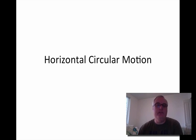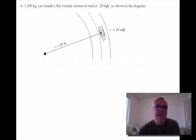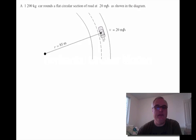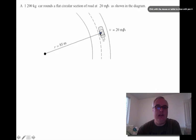Okay, horizontal circular motion. Remember that this is motion where the centripetal acceleration is perpendicular to the force of gravity. Here's a typical question: we have a 1200 kilogram car that is driving around a circular section of road at 20 meters per second. The acceleration for this car is directed towards the center of the circle.